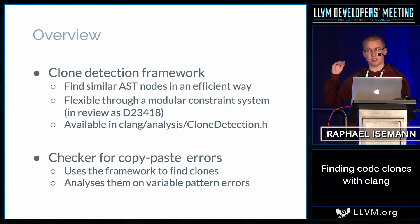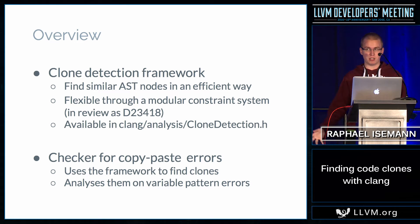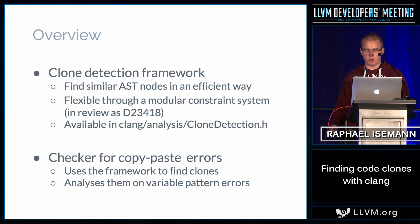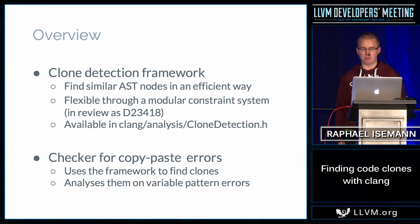We also did another thing that specifically looks for the bugs we just discussed: a checker for the Clang static analyzer. It uses the framework to find all similar nodes in a translation unit, and then checks the variables to see if we maybe have a situation like the one before — which results in really hard-to-find bugs, because the type system looks correct, but it's actually a pretty horrible bug.